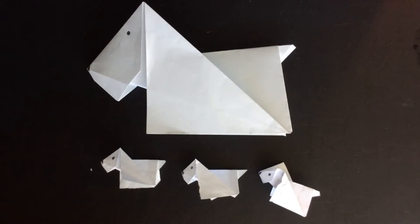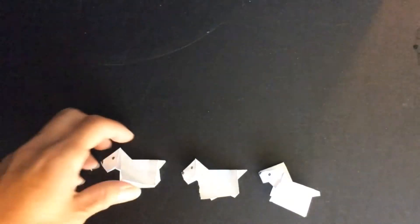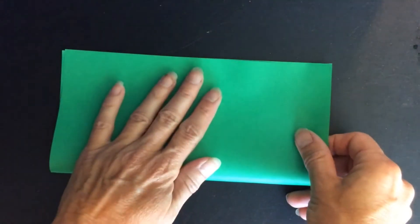Hi! I'm going to show you how to make an easy origami dog. Take a square piece of paper and fold it in half.